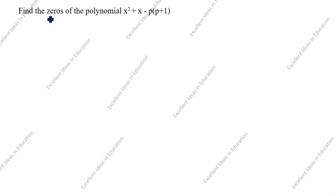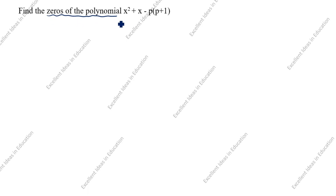In this question, we are given the zeros of the polynomial — we need the sum of the zeros and product of the zeros. Instead of factorizing using the formula minus b plus or minus root of b² minus 4ac divided by 2a, we will not use that formula. We will use another method in this question.